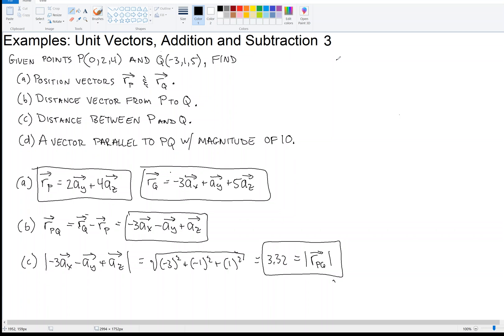Alright, I'll do D up here. A vector parallel to PQ. So whenever you see this notation, PQ, two points adjacent to one another, then that means the line, the segment. So a vector parallel to the line PQ with magnitude of 10.